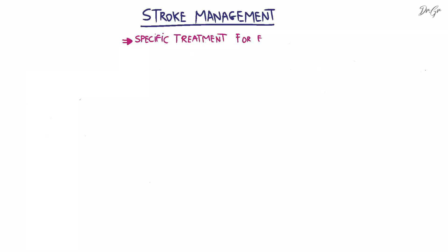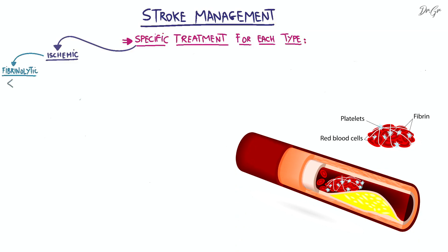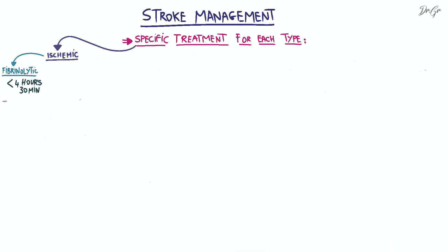There is a specific treatment for each type of stroke, which depends on the onset of the stroke and contraindications of each treatment. For ischemic stroke, specific treatment includes fibrinolytic therapy if the onset of stroke symptoms is within 4 hours and 30 minutes. Fibrinolytic therapy may be administered with several contraindications to consider before proceeding.